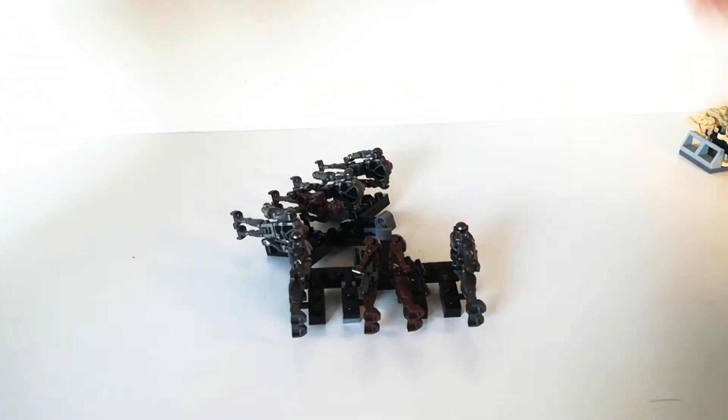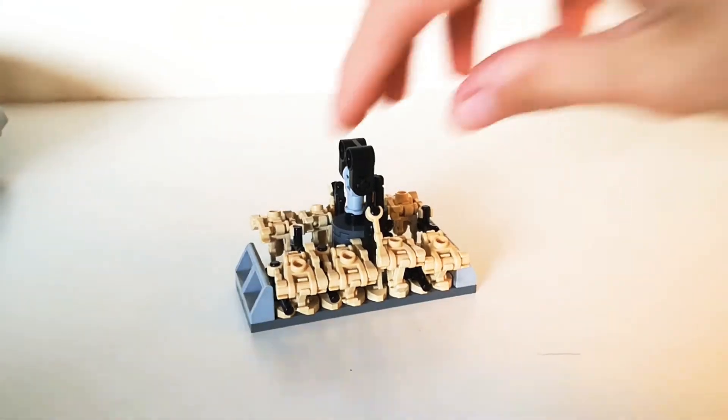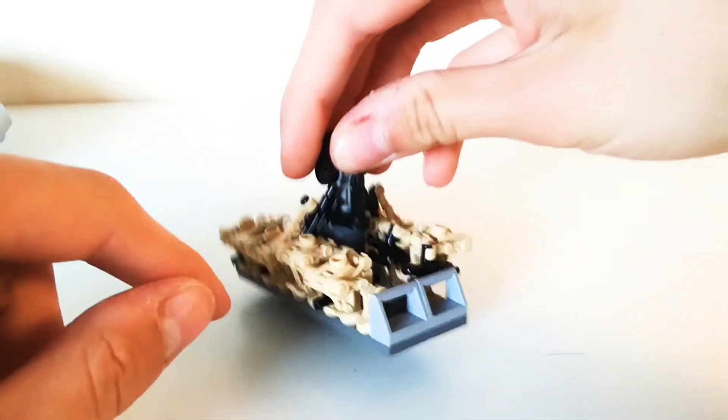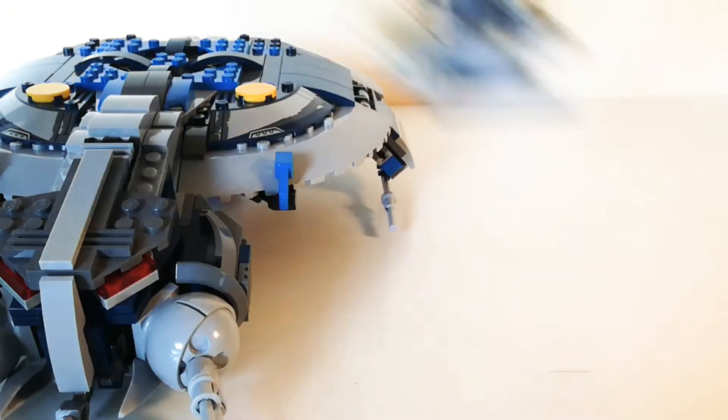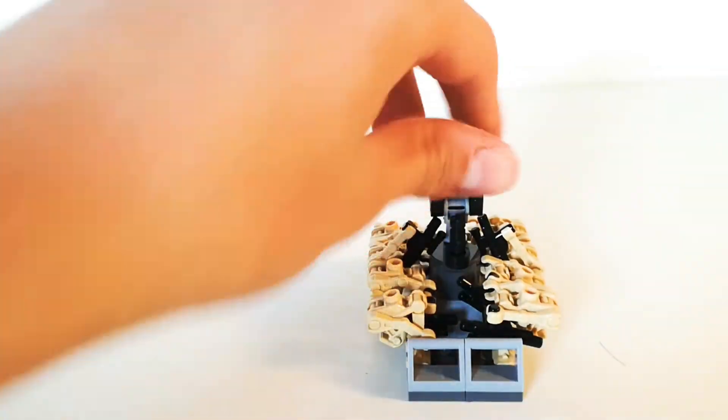Now let me show you how to build the battle droid rack. This one obviously carries more droids and it's a bit flatter too. I only built one, but you could build two if you wanted to, to put in either side of the gunship. For now I've only got one, so let me take all these droids off so you can see what it looks like.